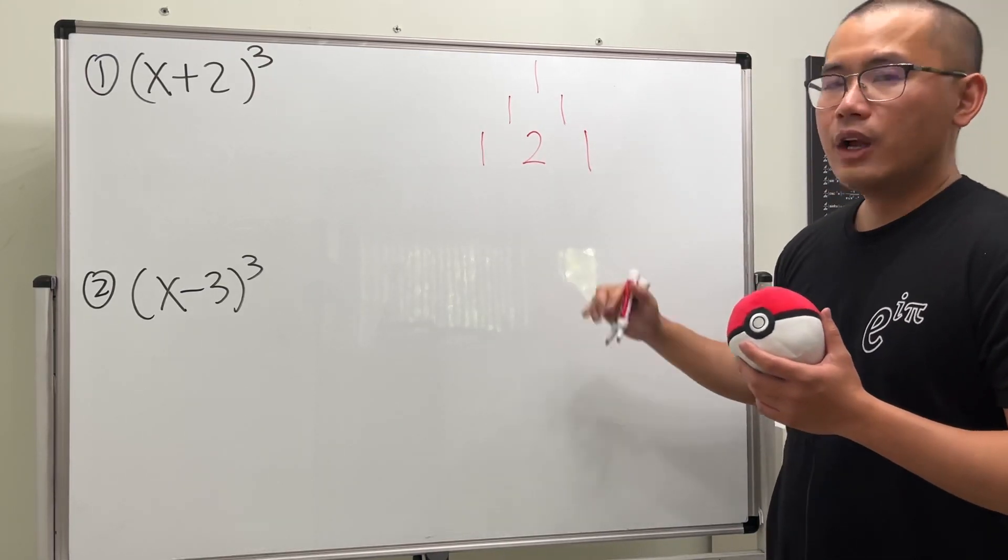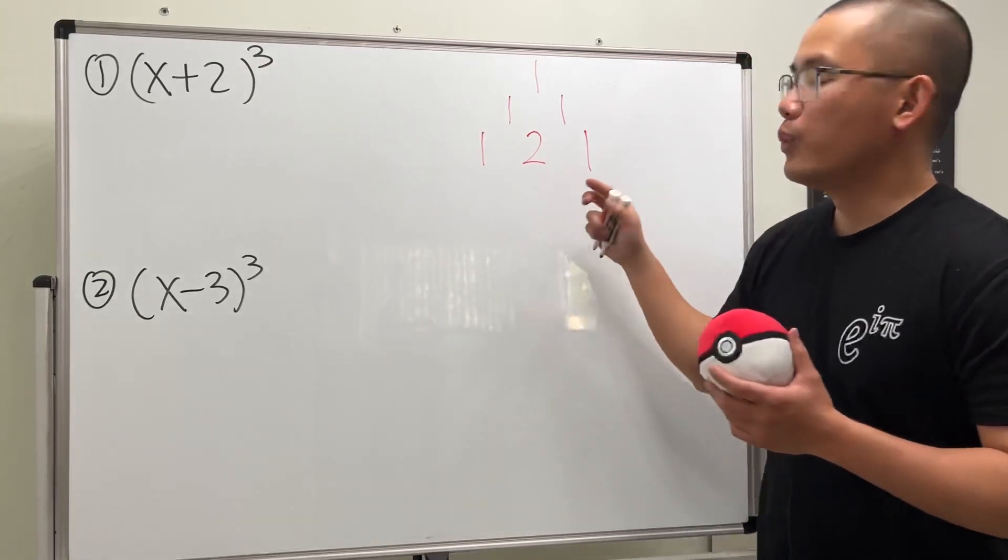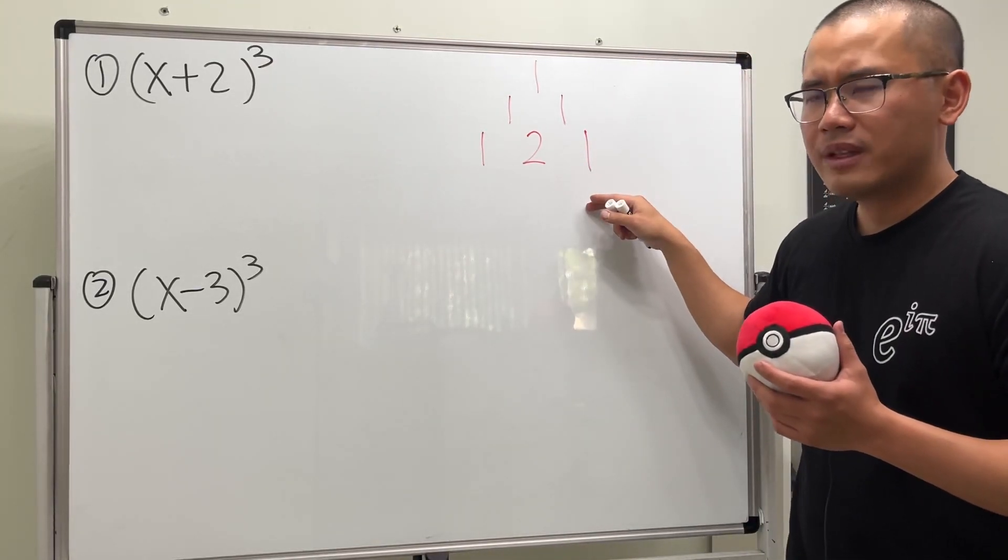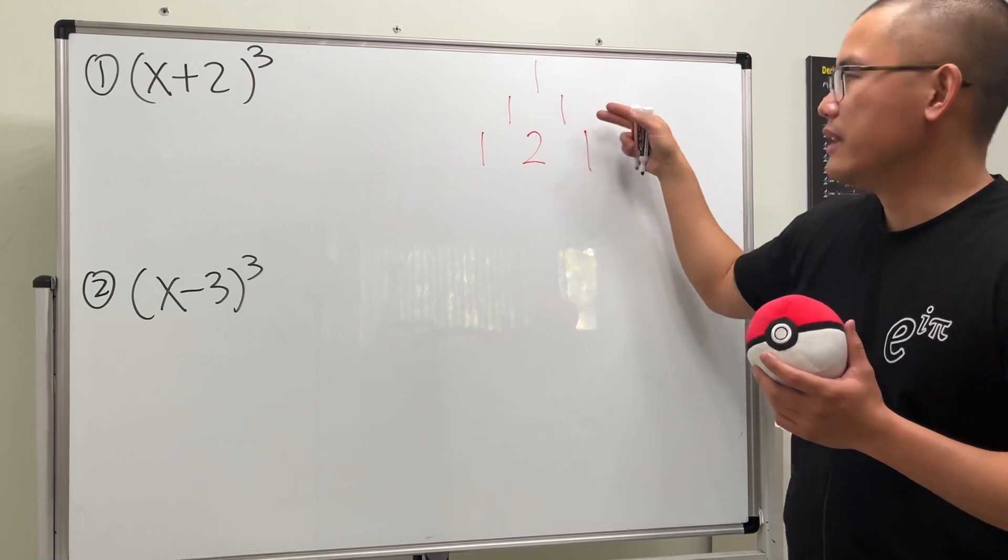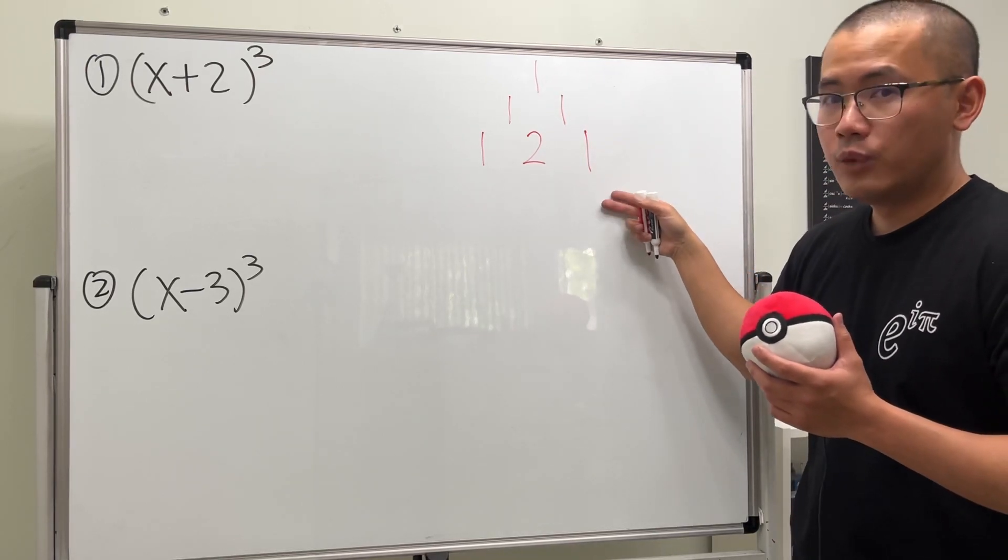We are not there yet because we want the third power, so we want to go to one more row. Technically this is the zero's row, and then the first, the second, and then we need a third row.